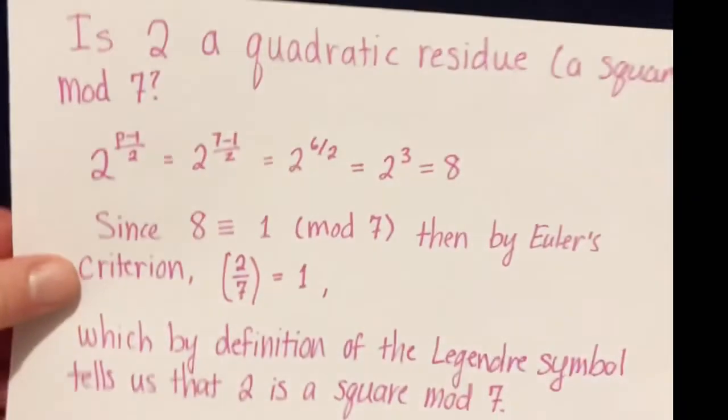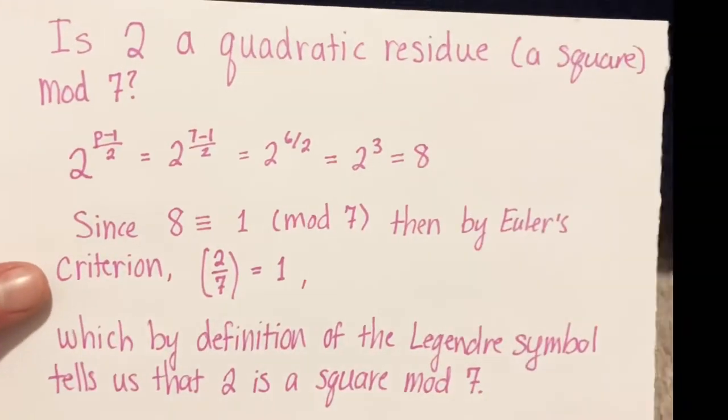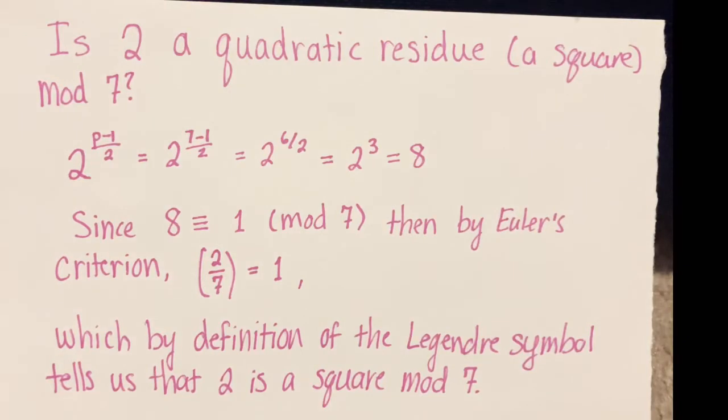For small primes, we automatically think that's not so bad. Something like, is 2 a quadratic residue mod 7? In this case, we can directly compute it. 2 to the p minus 1 over 2 is 2 to the 6 over 2, just 2 cubed, which is 8, and 8 is congruent to 1 mod 7. So by Euler's criterion, what we have is that 2 on 7 is 1, which means that 2 is definitely a quadratic residue modulo 7.